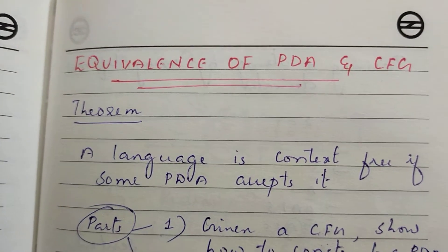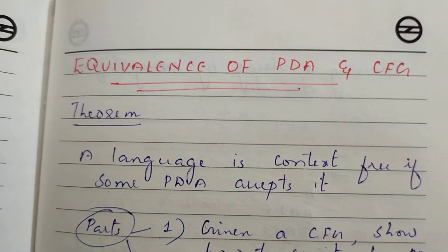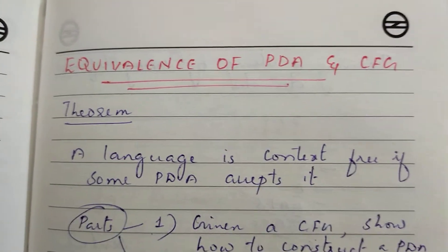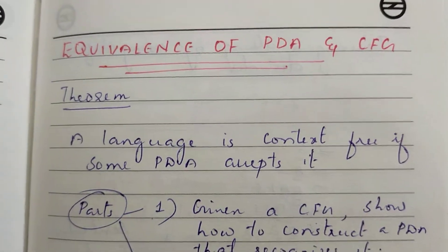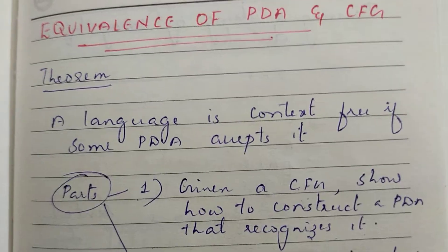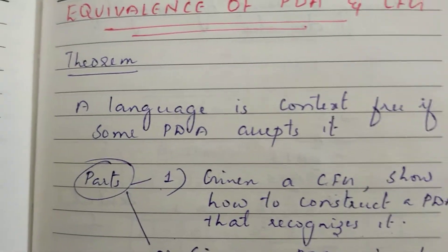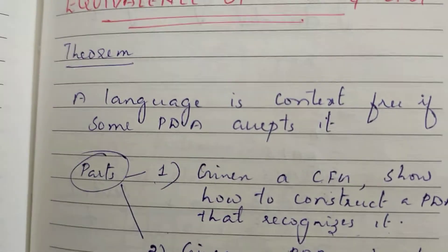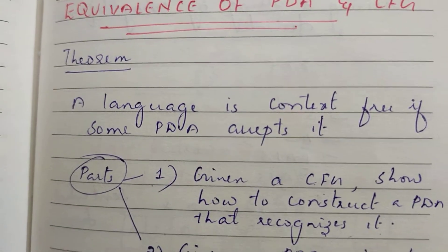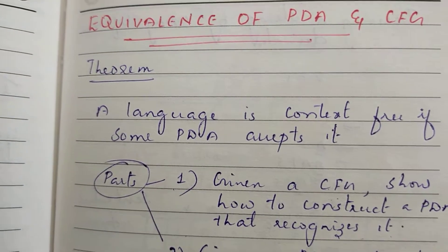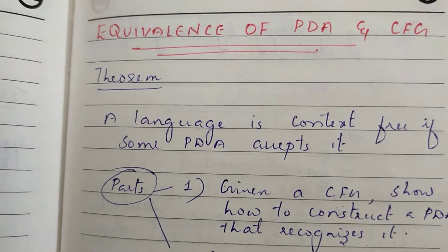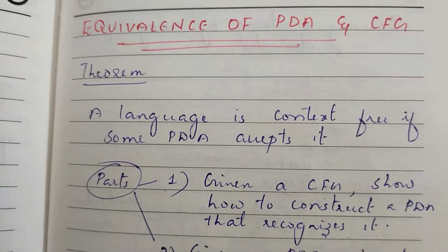In this video, we are going to prove the equivalence of PDA and CFG in the first part. In this video, I am going to talk about the second part. This is a pushdown automaton. It will create a corresponding grammar.